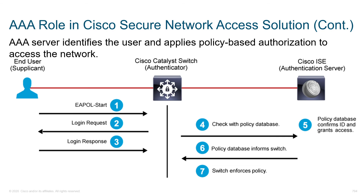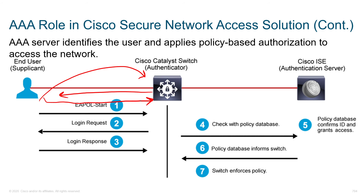This is what the login process typically looks like. We've got a user on the left-hand side. They kick things off with an EAP over LAN start frame — essentially saying, hey, I'd like to log into the network. The switch replies and asks, who are you? The user says, I'm User A. The switch takes those credentials and says, I don't know about User A, but let's pass it back to Cisco ISE and see if they do. The credentials are passed to ISE, which does a check within the local database.